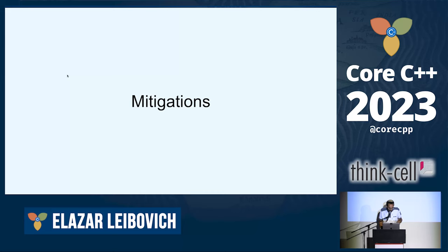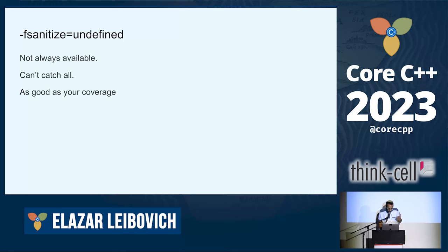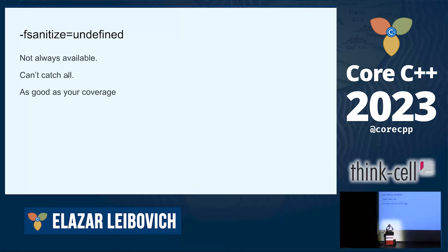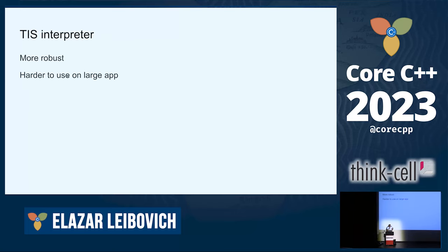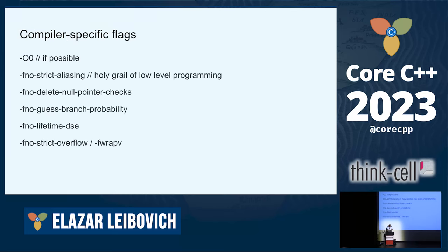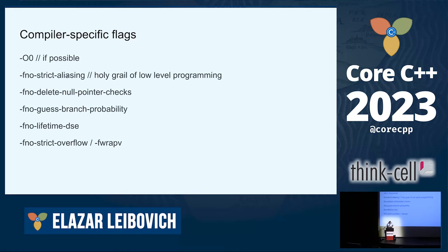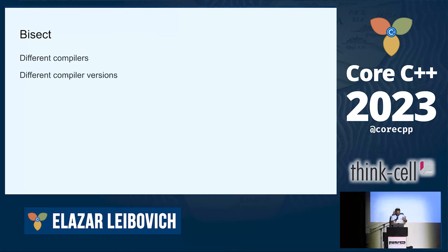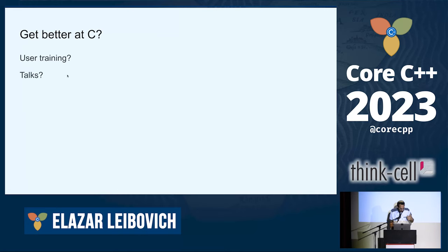For mitigations: UBSan, the undefined behavior sanitizer, is an essential tool every project must use, though it doesn't catch all undefined behaviors. TIS Interpreter is less known, more thorough, but can't handle an entire project. There are compiler-specific flags that disable specific problematic optimizations. Bisecting using different compiler versions is a major theme when investigating undefined behavior. User education, in my opinion, is not a valid solution.